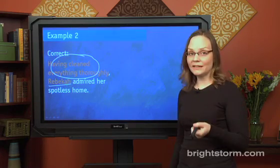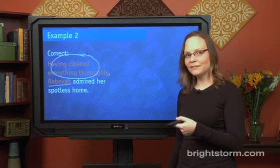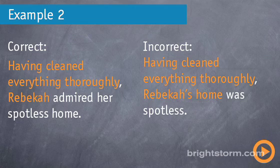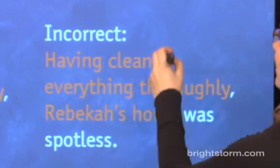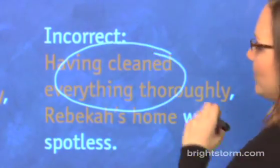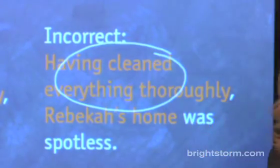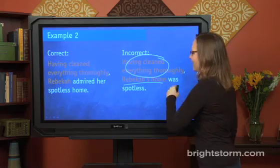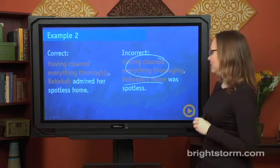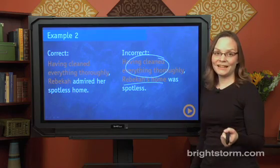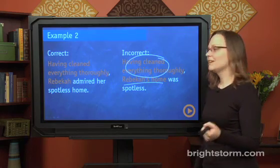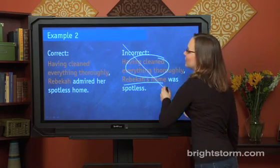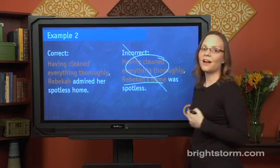Let's look at a really similar sentence using modifiers improperly: 'Having cleaned everything thoroughly, Rebecca's home was spotless.' The modifier is the same here, but instead of describing Rebecca, it now describes Rebecca's home. And that's not going to work, because Rebecca's home didn't do any cleaning. So this would be an incorrect answer choice on the SAT.